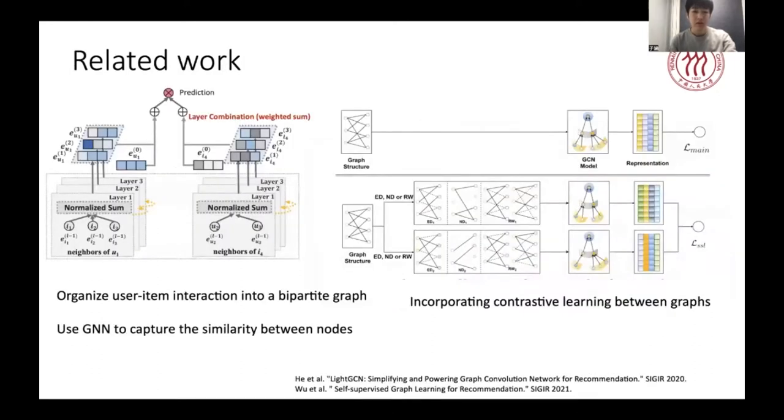In recent years, graph collaborative filtering methods have received more and more attention, as they get outstanding performance compared with other methods. These methods model the interaction data as graphs and learn user and item representations by graph neural networks. Several famous models like NGCF and LightGCN have achieved outstanding performance, and the architecture is followed by later works.